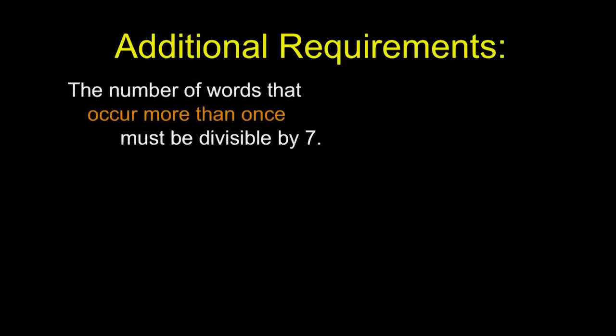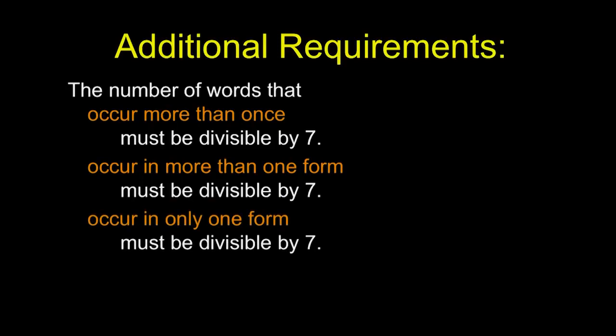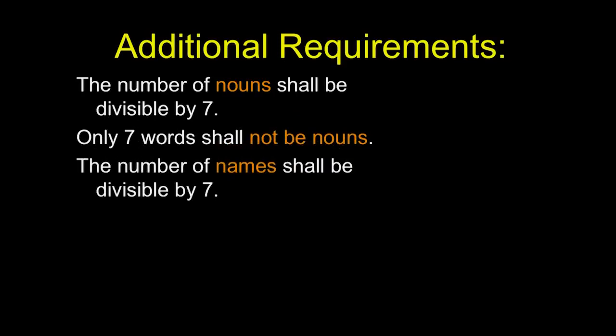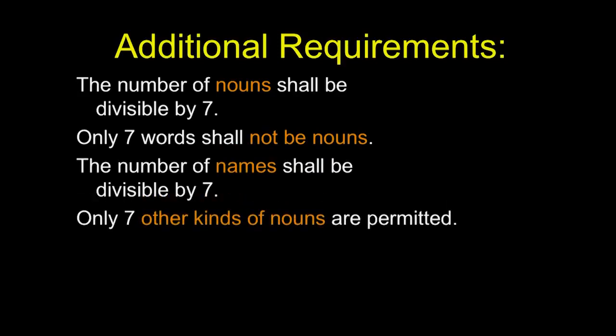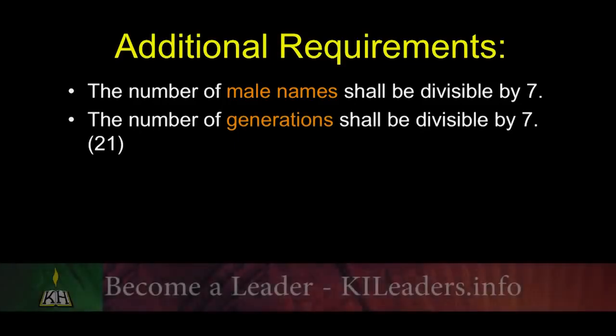The number of words that occur more than once to be divisible by seven. Those that occur in more than one form divisible by seven. Those that occur in only one form divisible by seven. The number of nouns shall be divisible by seven. Only seven words shall not be nouns. The number of names shall be divisible by seven. Only seven other kinds of nouns shall be permitted beside names. The number of male names shall be divisible by seven, and the number of generations shall be divisible by seven.